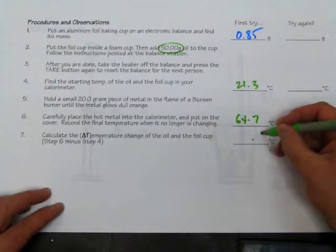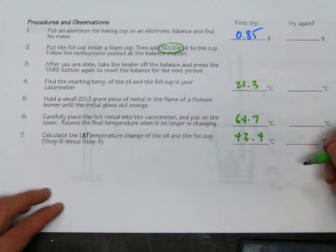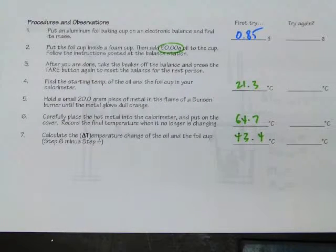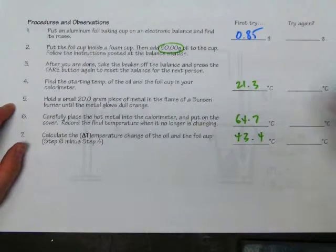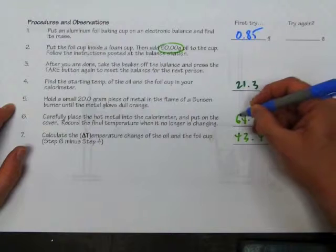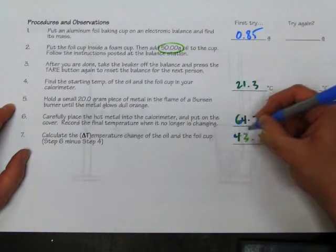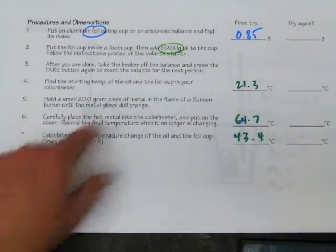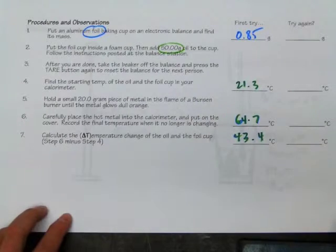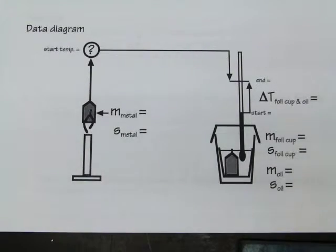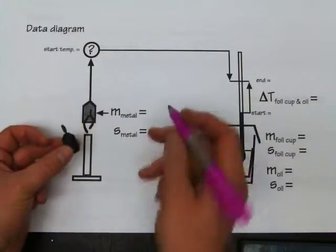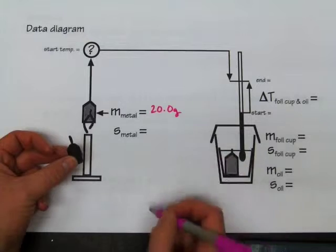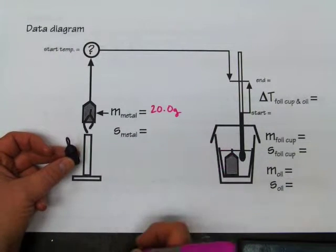That means the change in temperature of those materials was 43.4 degrees Celsius. There were two materials in there — not just the oil but also the foil — so these temperatures apply to both. I'll use colors to represent the different materials: blue for the foil and green for the oil. There's one more material to account for: the hot piece of metal, which I'll represent with the pink marker, has a mass of 20.0 grams.